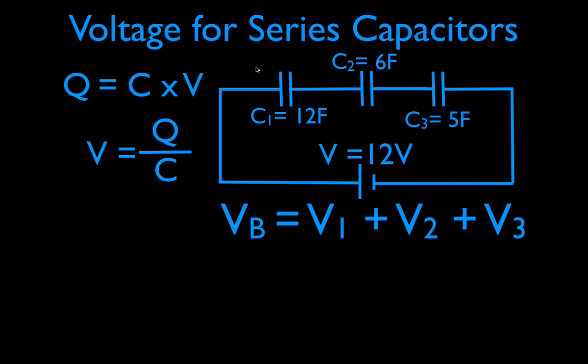Now, we want to do this for each of the individual capacitors. So, we have to use the charge across the capacitor, the individual capacitors, and the capacitance of the capacitors. Now, you remember from a previous video, we actually calculated the charge across each capacitor, and we found out that they're all the same. They all have the same charge. That's the rule for charge on series capacitors. They all have the same charge. Even though the capacitances are different, they have the same charge.